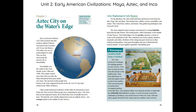Aztec beginnings in Lake Texcoco: On the lake shore, the Aztec built mud huts and lived on food from the lake — frogs, fish, and algae. They hunted deer, rabbits, coyotes, armadillos, and snakes. They raised bees, turkeys, and ducks, and gathered grasshoppers and worms for food. The Aztec adapted to their swampy environment by creating habitable land from the lake bottom. They built gardens called chinampas in the middle of Lake Texcoco. They built bridges over the marshes and grew a variety of crops on the mainland as well. They cultivated corn, beans, squash, tomatoes, amaranth, and chilies. Members of the ruling class grew fruit trees in their small, personal gardens. Crops grew throughout the year in Mesoamerica's tropical climate. As food supplies expanded, Tenochtitlan grew.